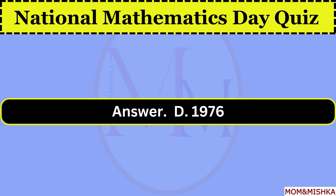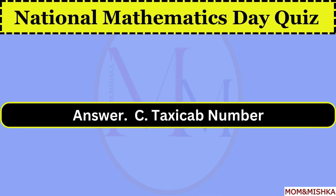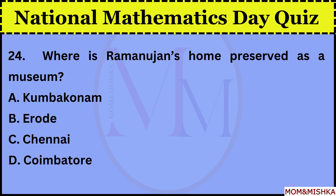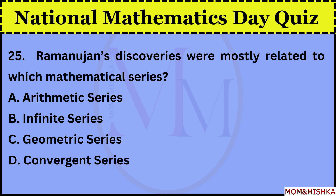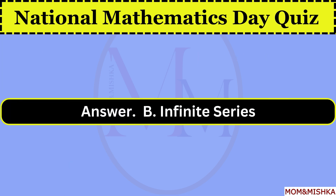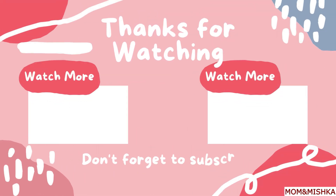In the year 1976, option D. What is the term for a number that can be expressed as the sum of two cubes in different ways? Taxicab number, option C. Where is Ramanujan's home preserved as a museum? Kumbakonam, option A. Ramanujan's discoveries were mostly related to which mathematical series? Infinite series, option B. Thanks for watching, see you in the next video.